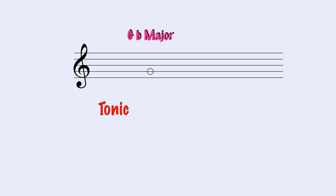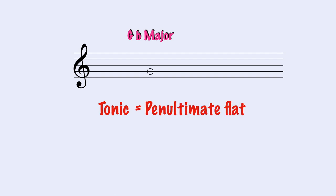Let's have another example. G flat major. The tonic is G flat, and this is also our penultimate flat. So we write the flats in order until we get to Sol: Si, Mi, La, Re, Sol — and then we add another one: Do. G flat major has six flats.